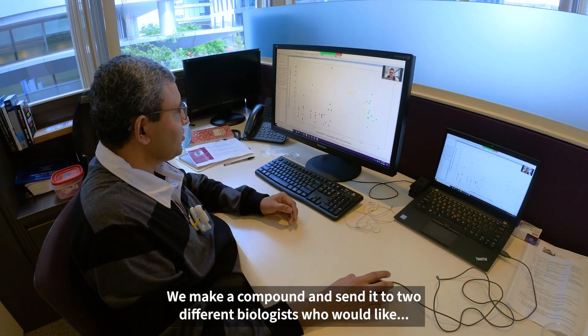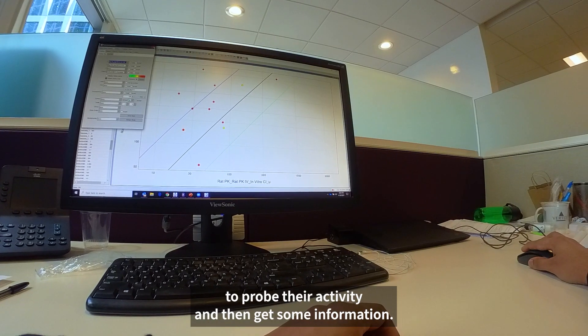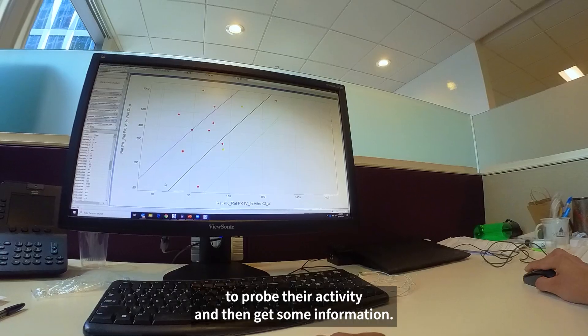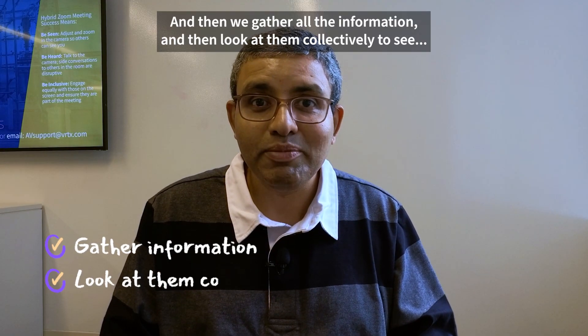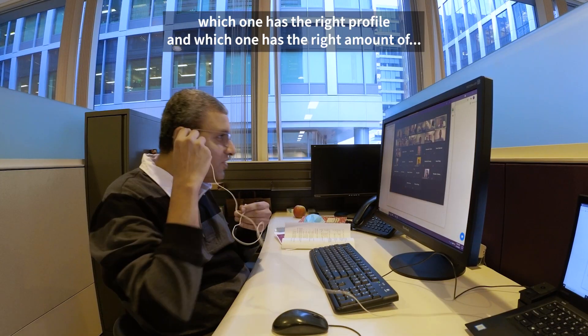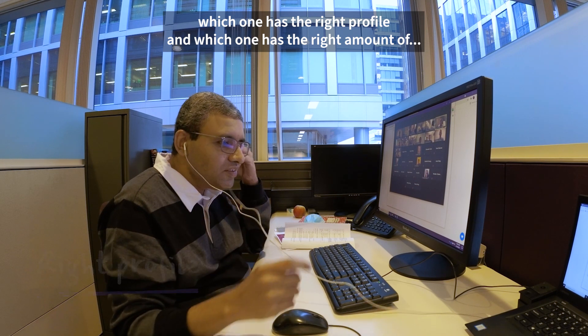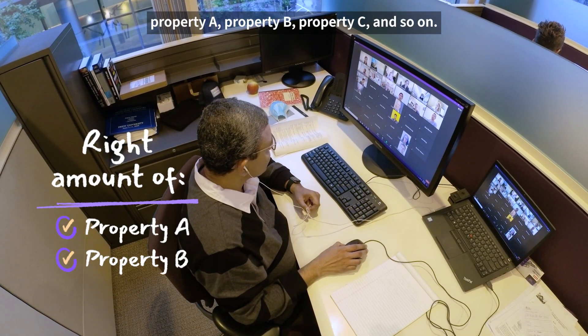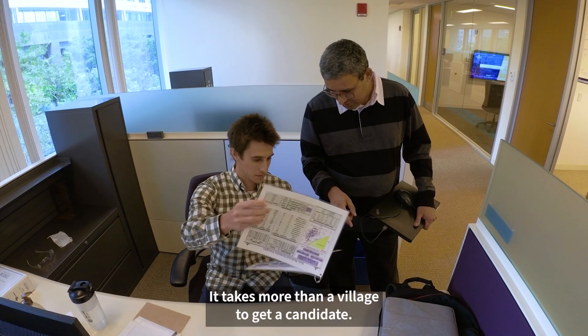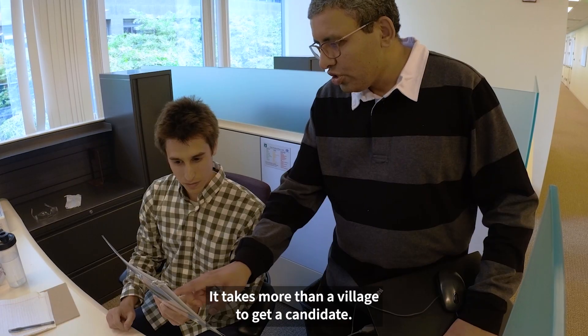We make a compound and send it to two different biologists who would like to probe their activity and then get some information. And then we gather all the information and then look at them collectively to see which one has the right profile, which one has the right amount of property A, property B, and property C, and so on.